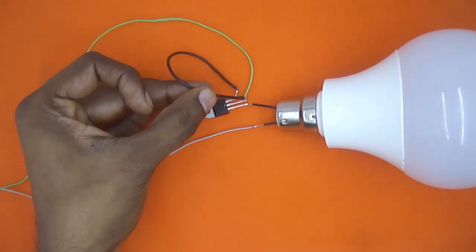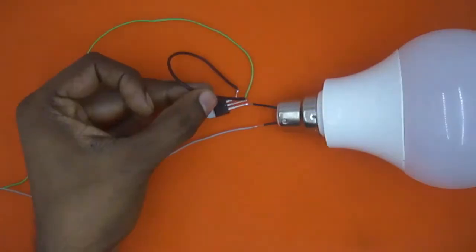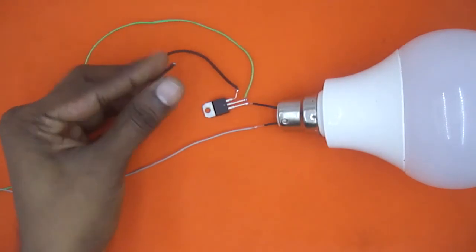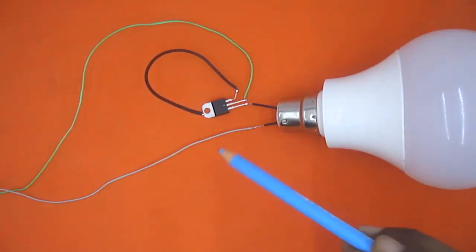So here you can see once again whenever I am touching this, it's glowing. So this is the basic principle, the working principle of a TRIAC. We just need to connect simple electronics and it will start working.